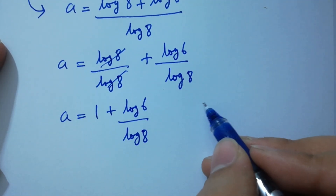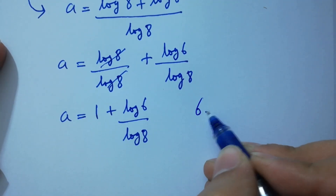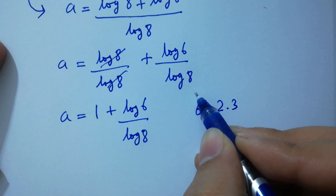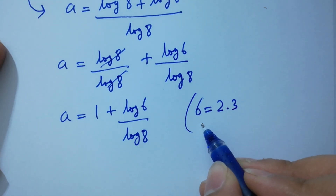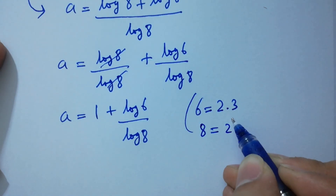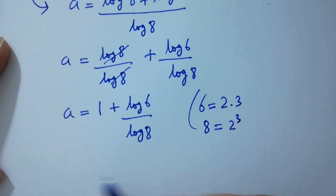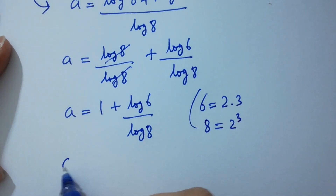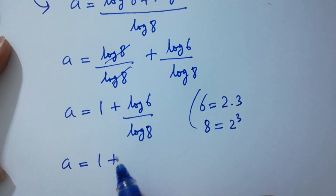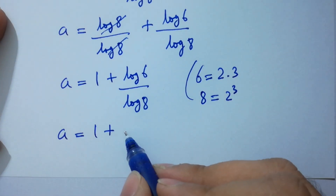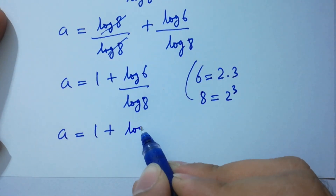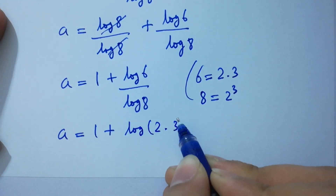Since 6 equals 2 times 3 and 8 equals 2 cubed, a will be equal to 1 plus log(2 times 3) over log(2 cubed).